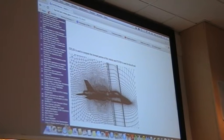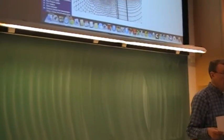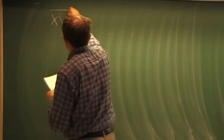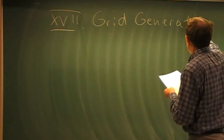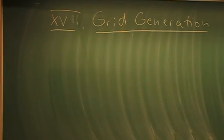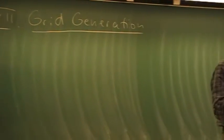It makes sense to look into this in more detail, because our full numerical simulation depends on the grid we choose and on grid quality. This brings us to Chapter 17: the introduction to grid generation, also called mesh generation. As literature, I recommend the textbook by Fletcher, with Chapter 10 devoted to grid generation. We shall focus primarily on structured grids.